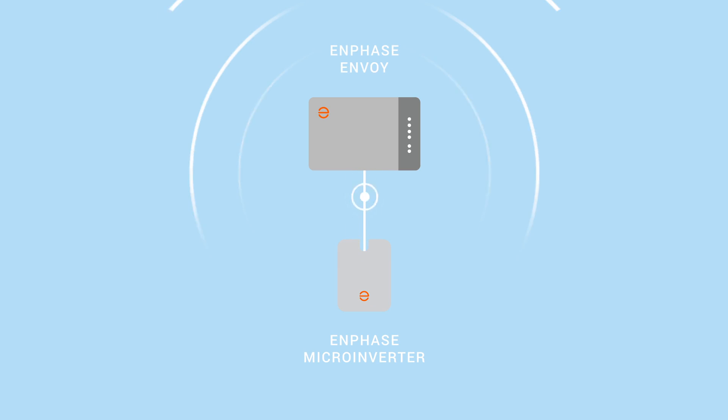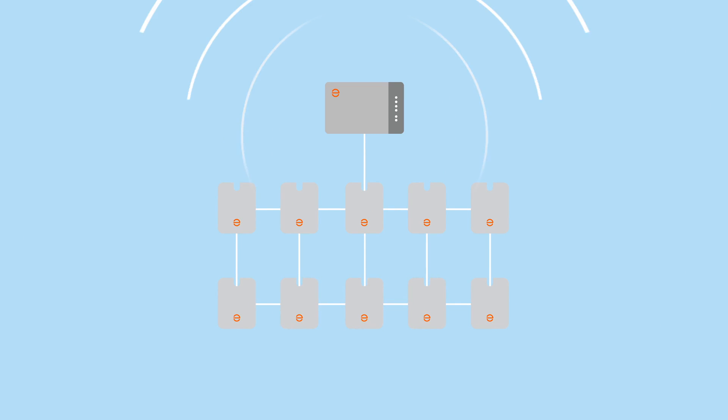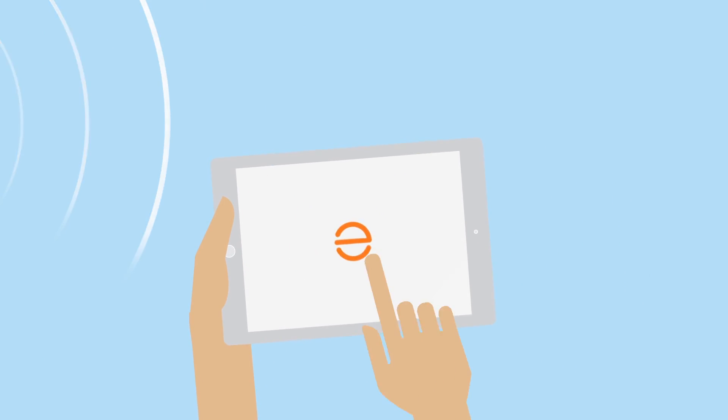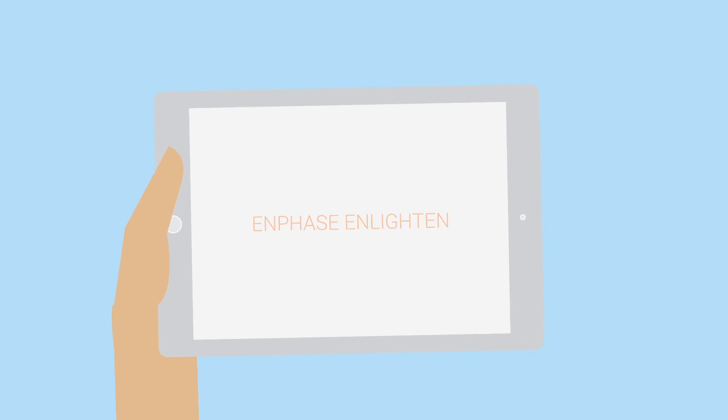These microinverters connect to a networking hub, the Enphase Envoy, which helps monitor your system, tracks your energy usage, and speaks to the Enphase Enlighten app. With Enlighten, you can see how much energy your home is generating and using.